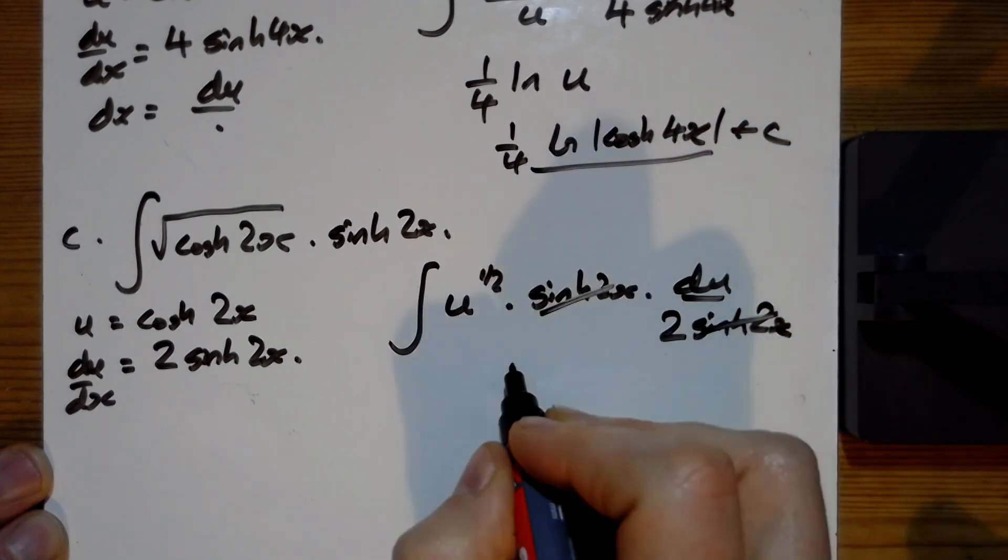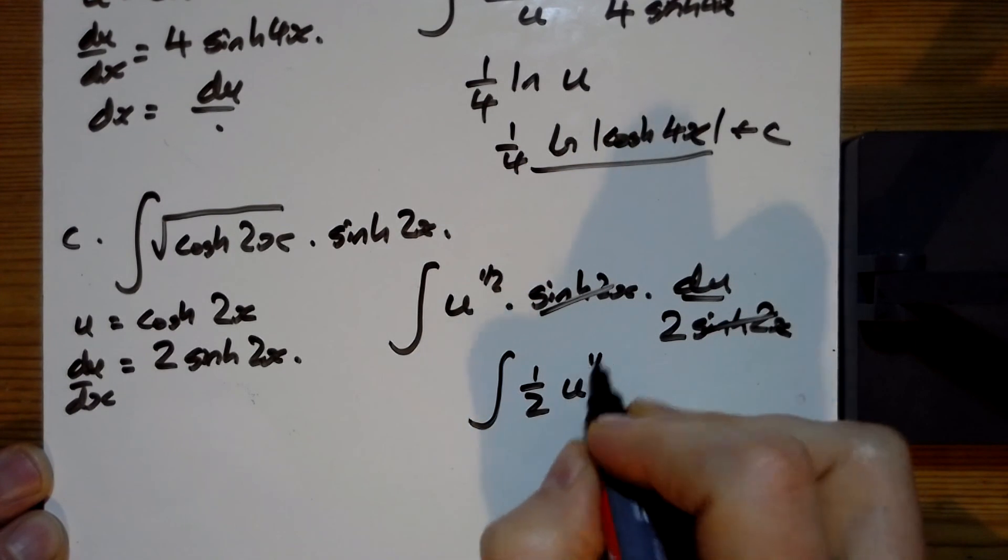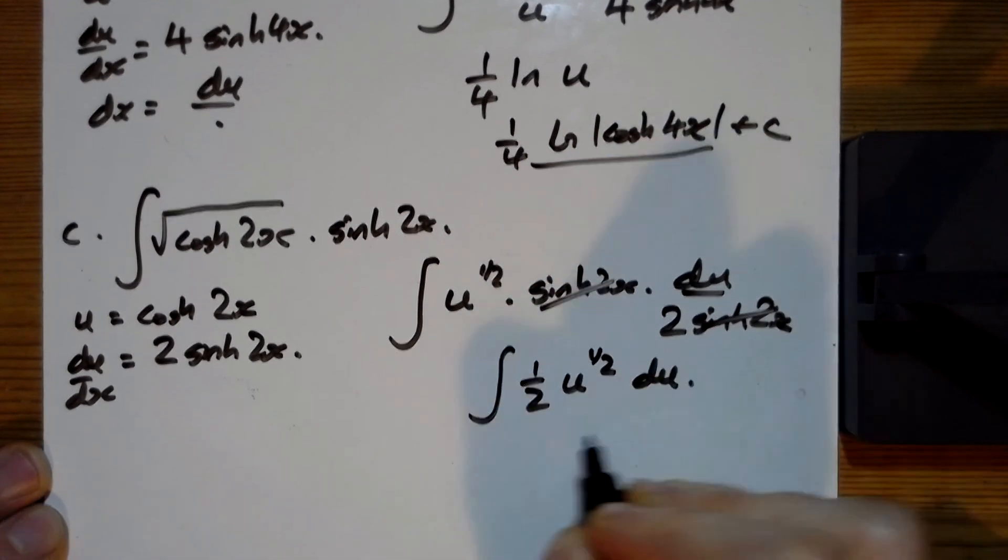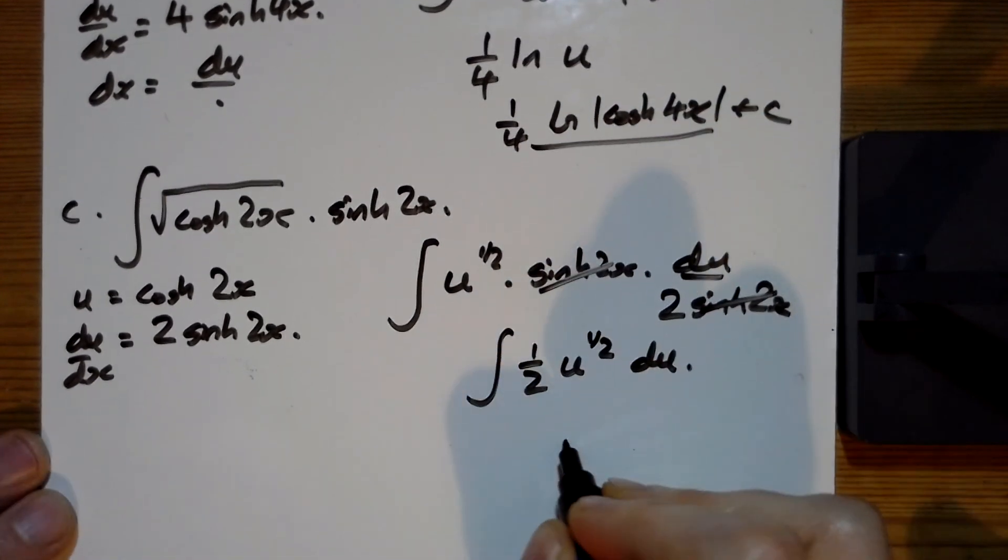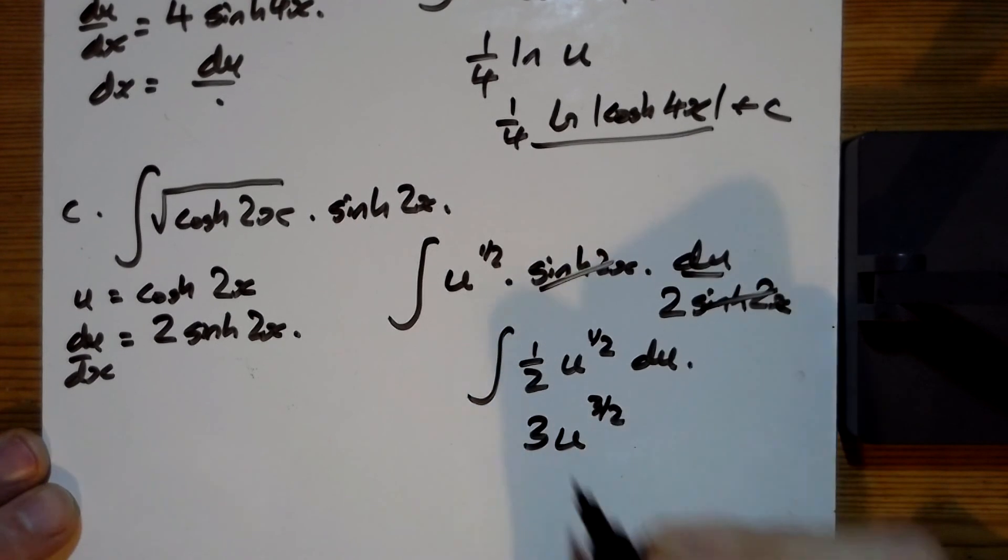The sinh two x's cancel, we're integrating a half u to the half du. So the power goes up by one, so we've got u to the three over two, so you've got a three coming out of it there.